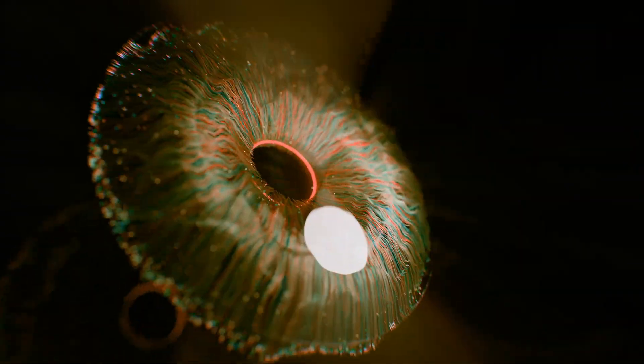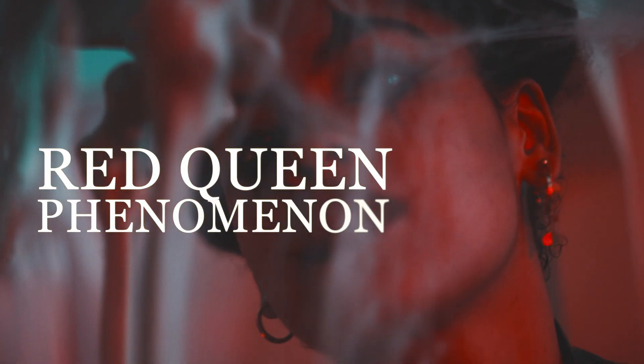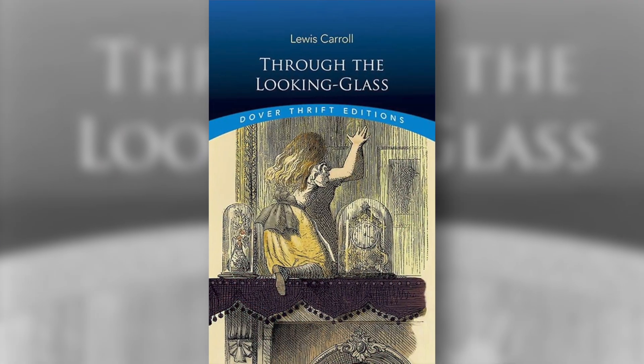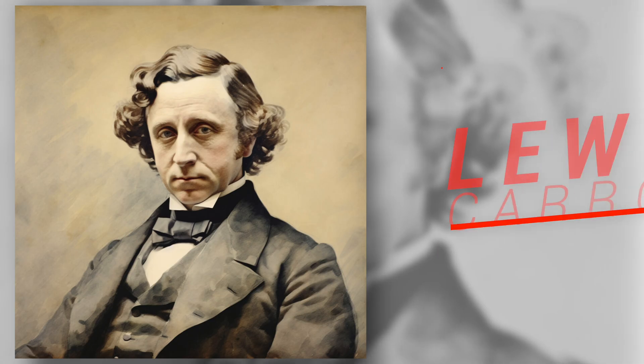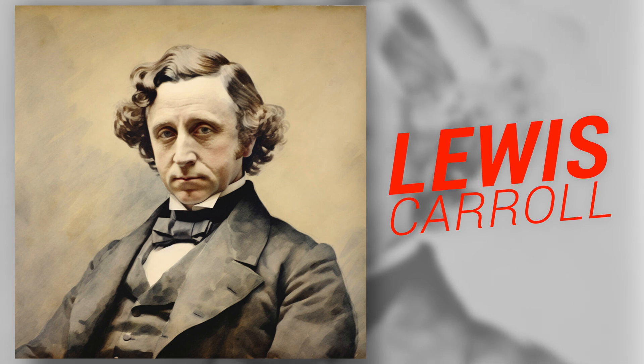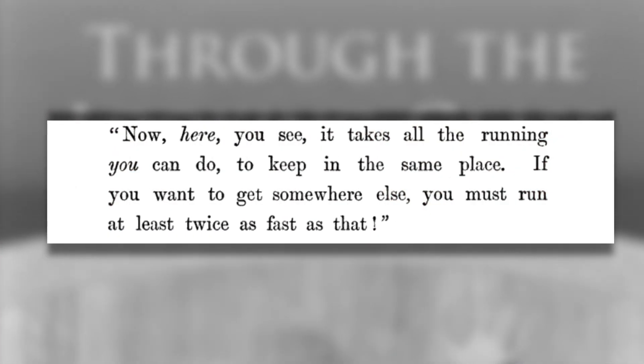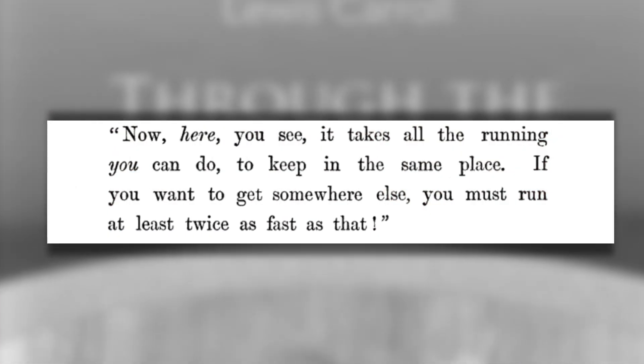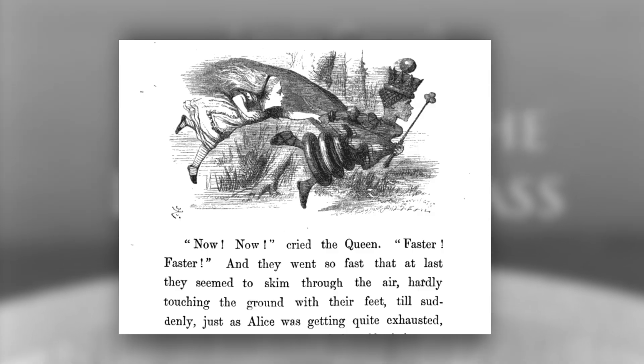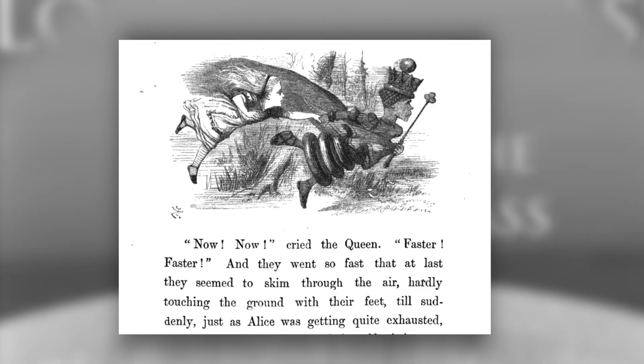This fractal-like pattern of inequality repeats throughout society, showing the imbalances we see all around us. Now let's move on to the Red Queen phenomenon. This idea, borrowed from evolutionary biology, comes from Through the Looking Glass by Lewis Carroll. In chapter two, the Red Queen tells Alice, as they're standing in a flower garden, that here you have to do all the running just to stand in the same place.